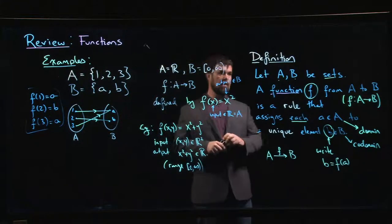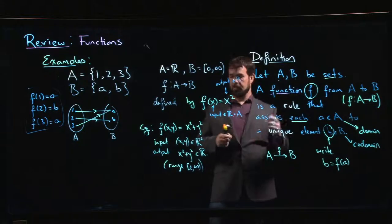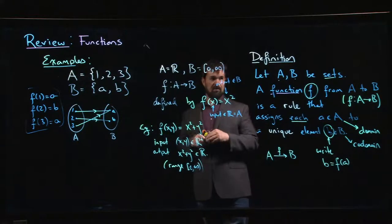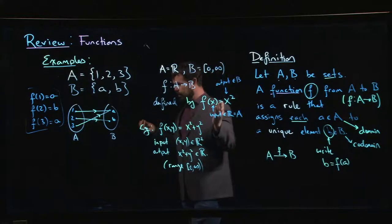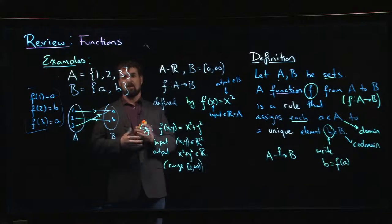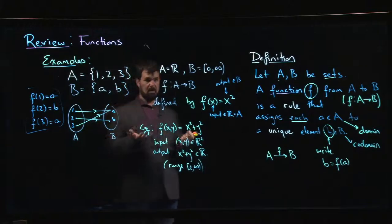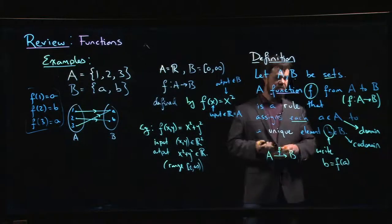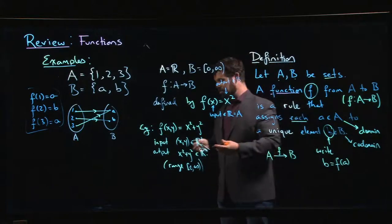You could look at something where maybe you take A and B to be something like the set of all female humans, and the relationship is mother to daughter. You could ask, is that a function? Well, that's not necessarily going to be a function because there are some mothers who have more than one daughter. So you might have two outputs for a given input.